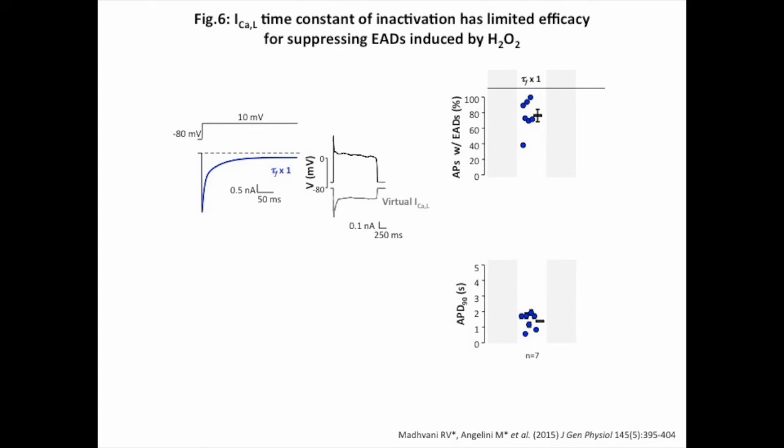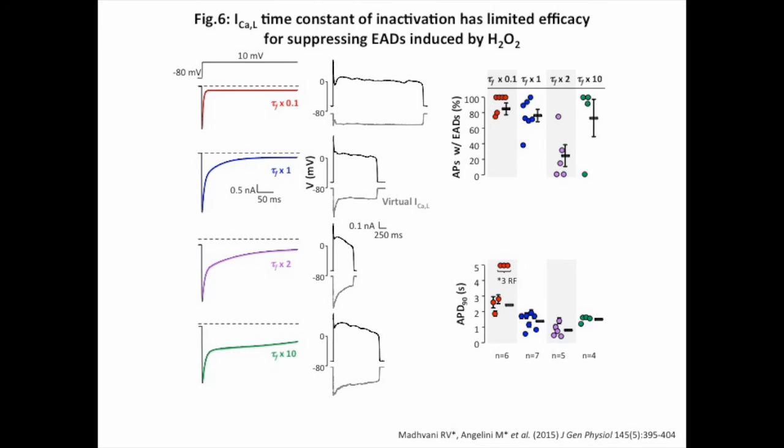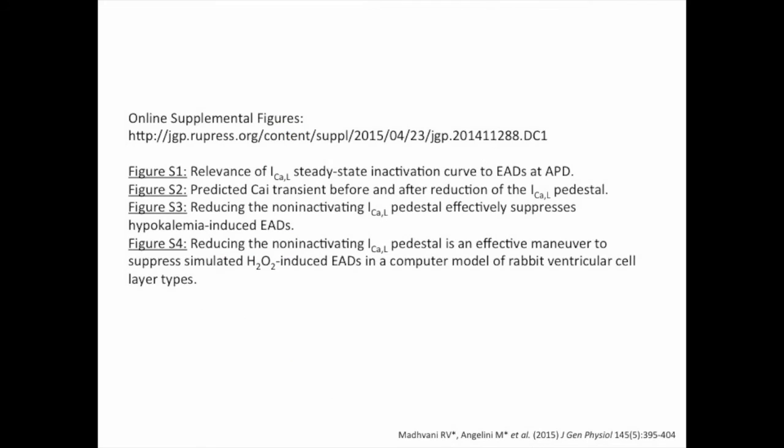Similarly, modification of the time constant of inactivation of the L-type calcium current by up to tenfold in either direction shown in Figure 6 did not restore action potential duration to a normal range, even though EAD suppression was observed for a two-fold decrease of the rate of inactivation. However, since this modification also resulted in long action potentials, which can be highly arrhythmogenic, we did not consider this maneuver to be a favorable anti-arrhythmic target.